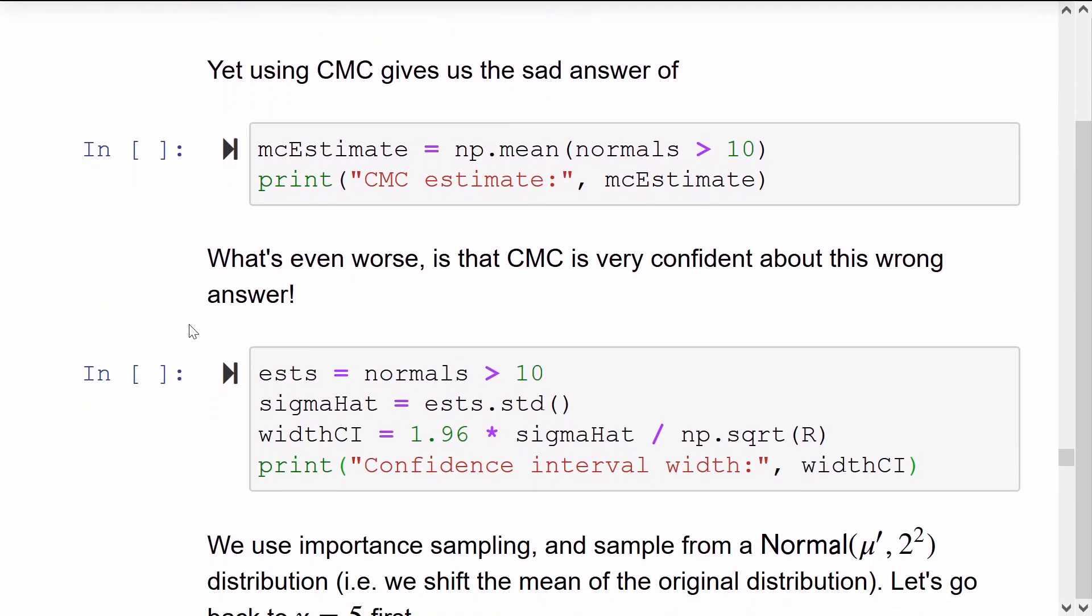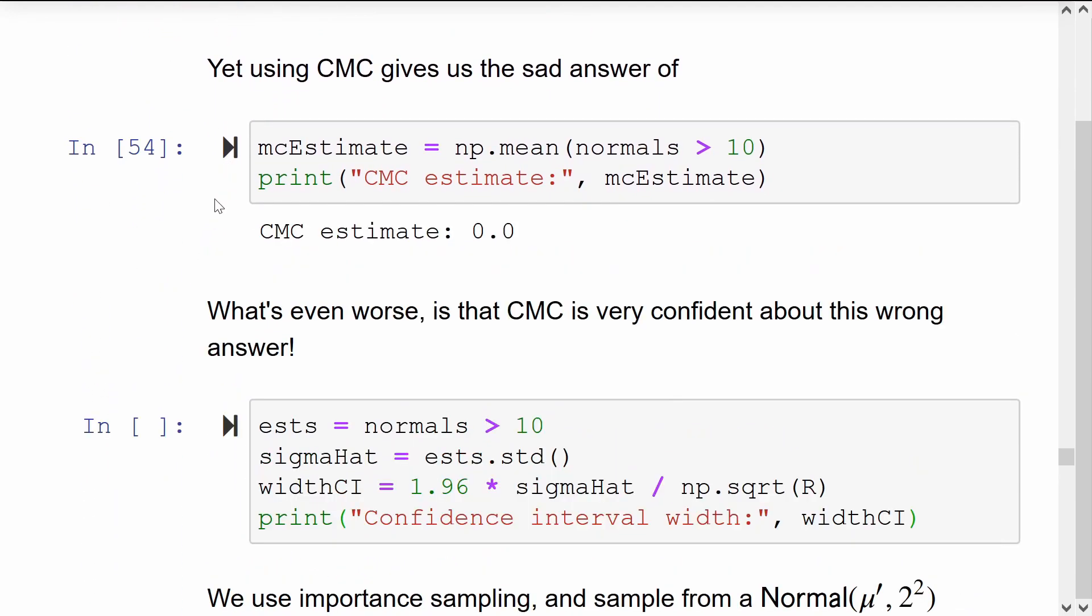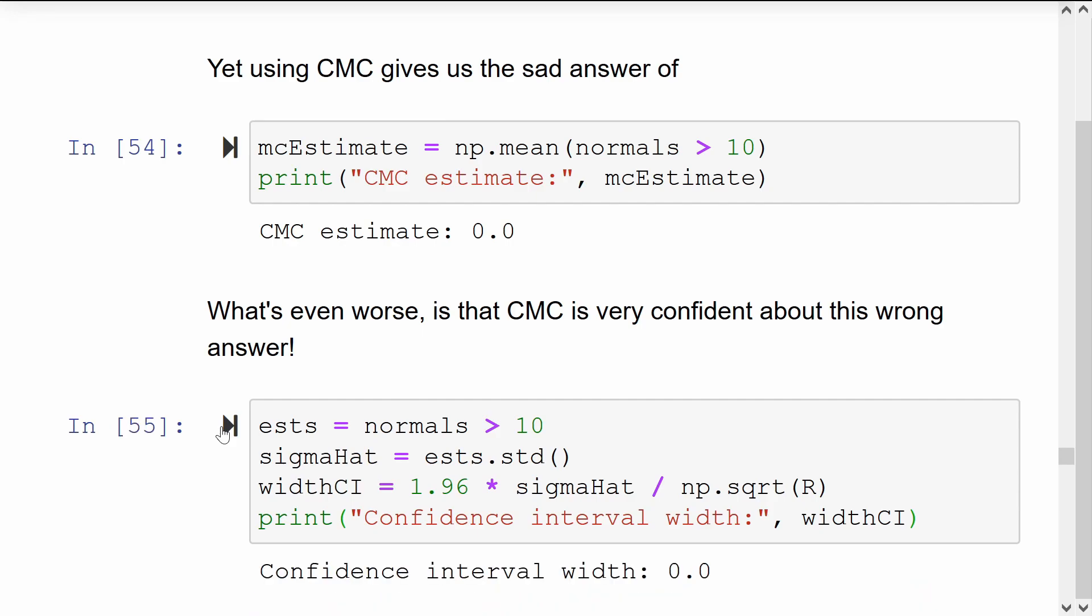But instead, Crude Monte Carlo will give us the number 0. This is the classic problem with using Crude Monte Carlo in the rare event scenario. What's even worse is that the confidence intervals are also 0. The problem is because we simulated many normals, but because our event of interest is rare, we didn't even observe one situation where the event happened.